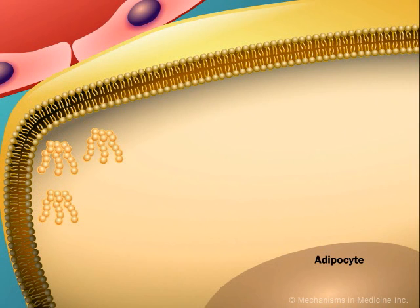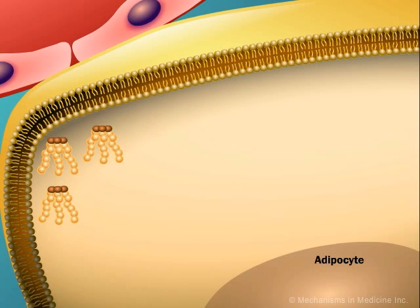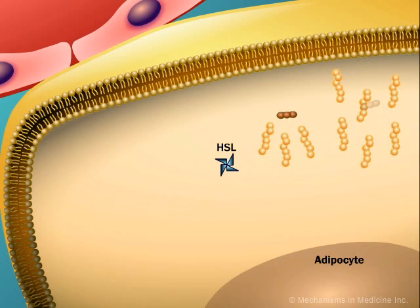Once inside the adipocyte, three molecules of free fatty acids combine with one molecule of glycerophosphorylcholine, or 2-monoglyceride, to form a triglyceride particle. In the adipocyte, the newly formed triglycerides are subsequently acted upon by hormone-sensitive lipase. This causes them to again disassemble into free fatty acids and glycerol. As a result, the increased amount of free fatty acids is again released from the adipocyte into the blood circulation.